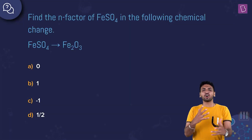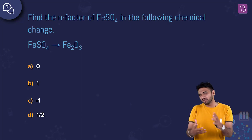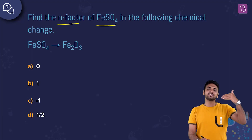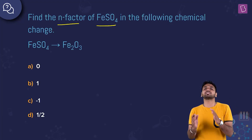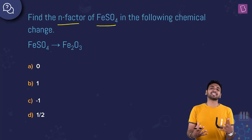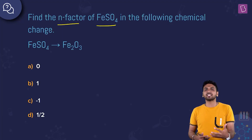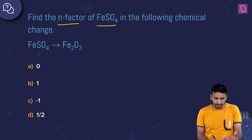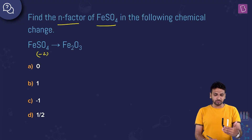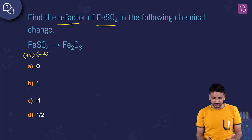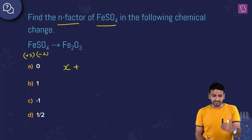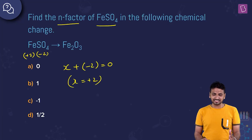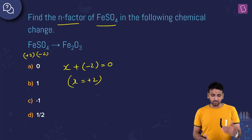Here we have a question on n-factor calculation from redox reactions. Find the n-factor of FeSO4 in the reaction: ferrous sulfate converts to ferric oxide (Fe2O3). First, let's calculate the oxidation number of iron in FeSO4. Sulfate is SO4²⁻, so the molecule is neutral, giving Fe an oxidation state of +2.